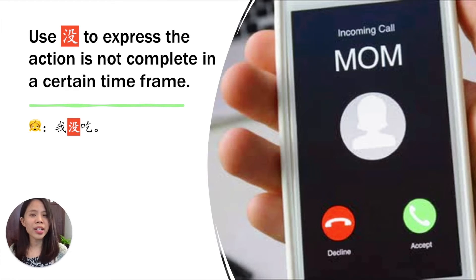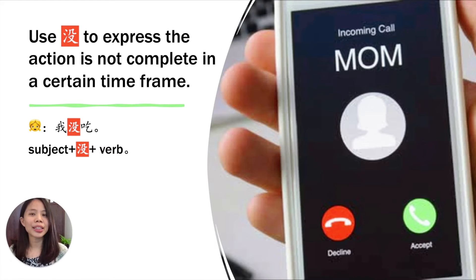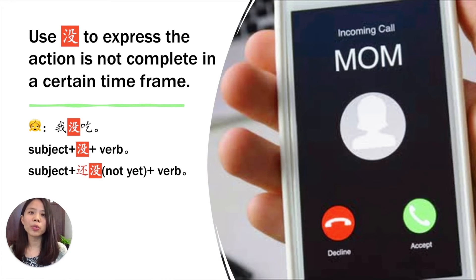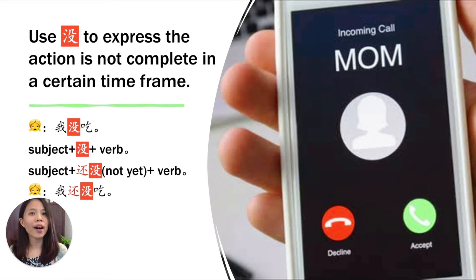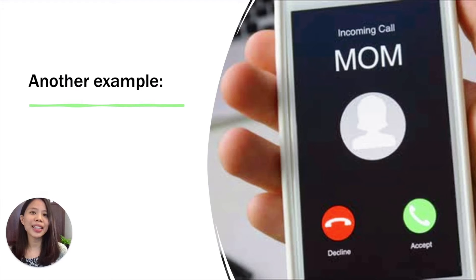我没吃。 The structure is: Subject + 没 + verb. 我没吃。 Or maybe you just want to say 'I haven't eaten yet, I will eat later.' So you can use 还没: 我还没吃。